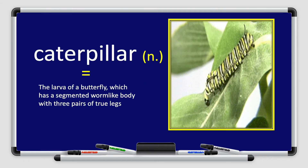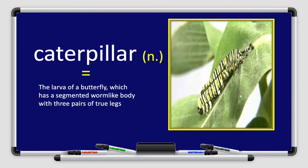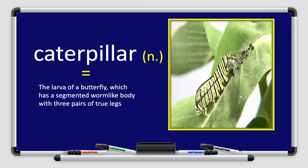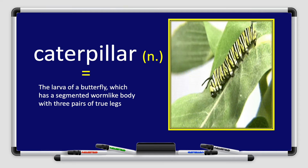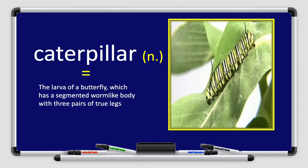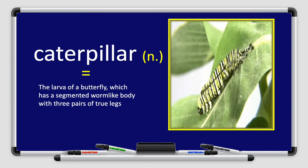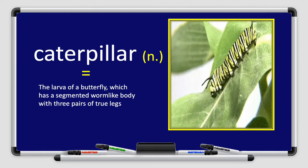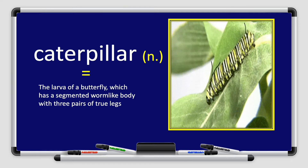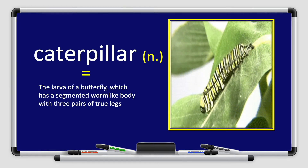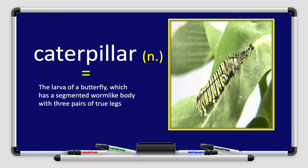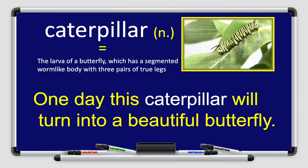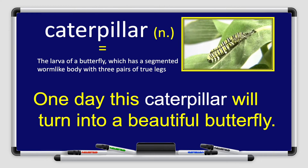Next we have the word caterpillar. Caterpillar. It's a noun. Repeat after me: caterpillar. Caterpillar means the larva of a butterfly which has a segmented worm-like body with three pairs of true legs. Let's use the word caterpillar in a sentence: One day this caterpillar will turn into a beautiful butterfly.